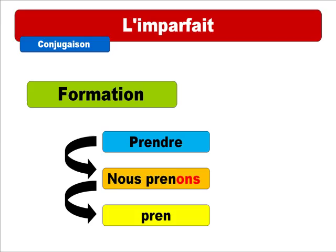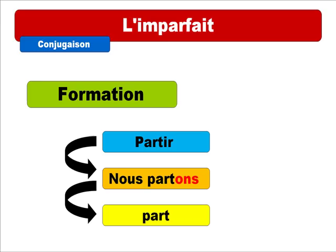Another example is boire. I chose boire because it's highly irregular, especially for nous. At the present form, you get 'nous buvons.' You spot the ending -ONS, take it away, and you get BUV. Last but not least: partir. 'Nous partons' — remove the -ONS ending — and you get PART, P-A-R-T.